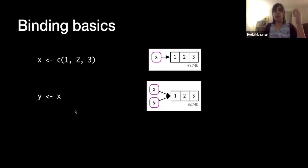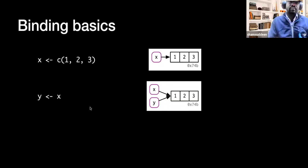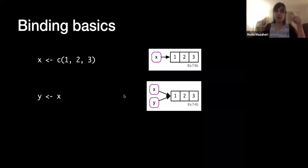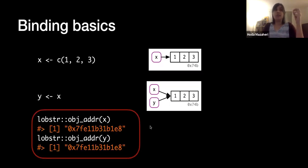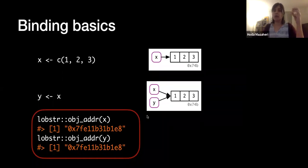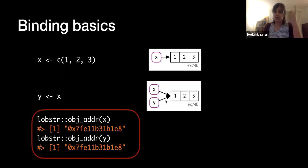But what happens when we assign a second name to the same object? We learned that R does not produce a copy at this level, and this is for memory optimization. Instead, R puts a second reference to the same object, which we can confirm with the object_address function from the lobster package. As you can see, the output of both X and Y is identical — meaning there is no copy, but there are two different names for the same object and a shared binding.